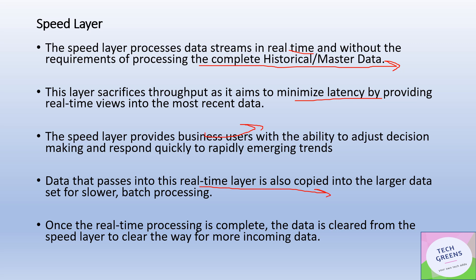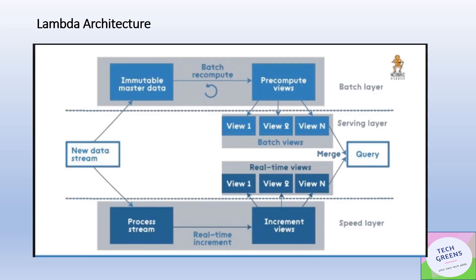One important fact: whatever is processed at the speed layer is also copied into the batch layer, because the batch layer is the entire system of records — everything is copied into the batch processing layer. To achieve low latency at the speed layer, once data is processed it is deleted so that we can make way for the next incoming data. Nothing is persistently kept at the speed layer — we keep on creating incremental views there. The serving layer is the most important layer for presenting data to downstream systems. As you can see in this picture, it merges the views created from the batch layer and the views created from the speed layer together to answer any kind of ad hoc queries.